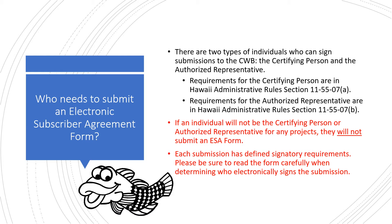Requirements for the certifying person are in Hawaii Administrative Rule Section 11-55-7a. If an individual will not be the certifying person or authorized representative for any projects, they will not submit an ESA form. Each submission has defined signatory requirements. Please be sure to read the form carefully when determining who electronically signs the submission.